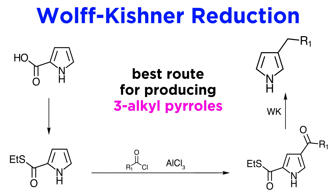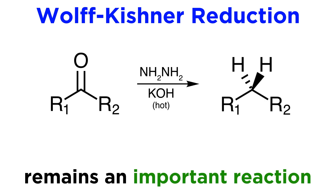This three-step procedure is still the best way to prepare 3-alkyl pyrroles, and it highlights the utility of the Wolf-Kishner reduction in situations where a carbonyl is needed to carry out a specific transformation efficiently, but must then be removed to prepare a target which is not accessible directly. Such strategies are common in organic synthesis. In summary, the Wolf-Kishner reduction is still the most direct way to reduce ketones to alkanes, and it is important for all organic chemists to be familiar with it.